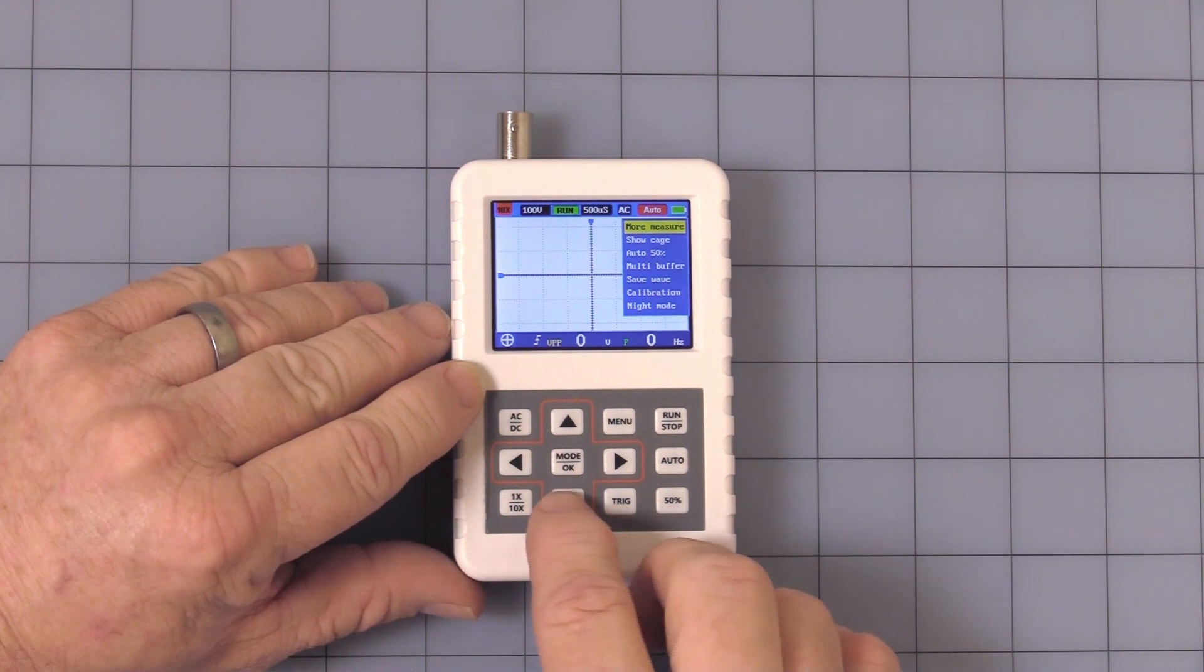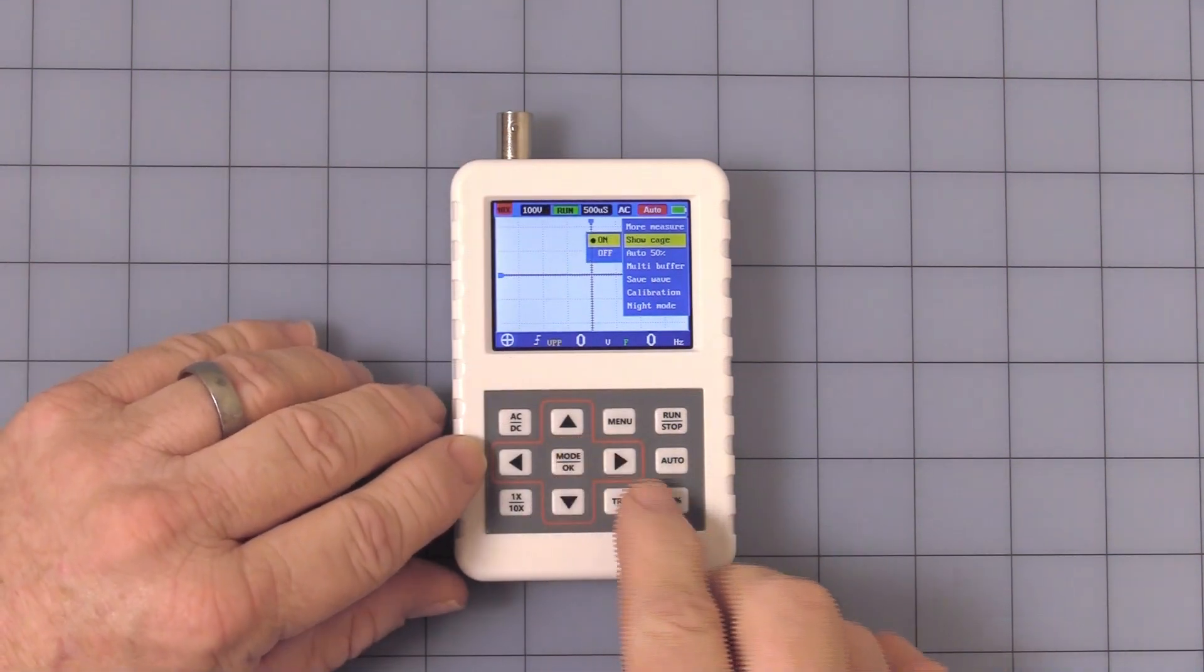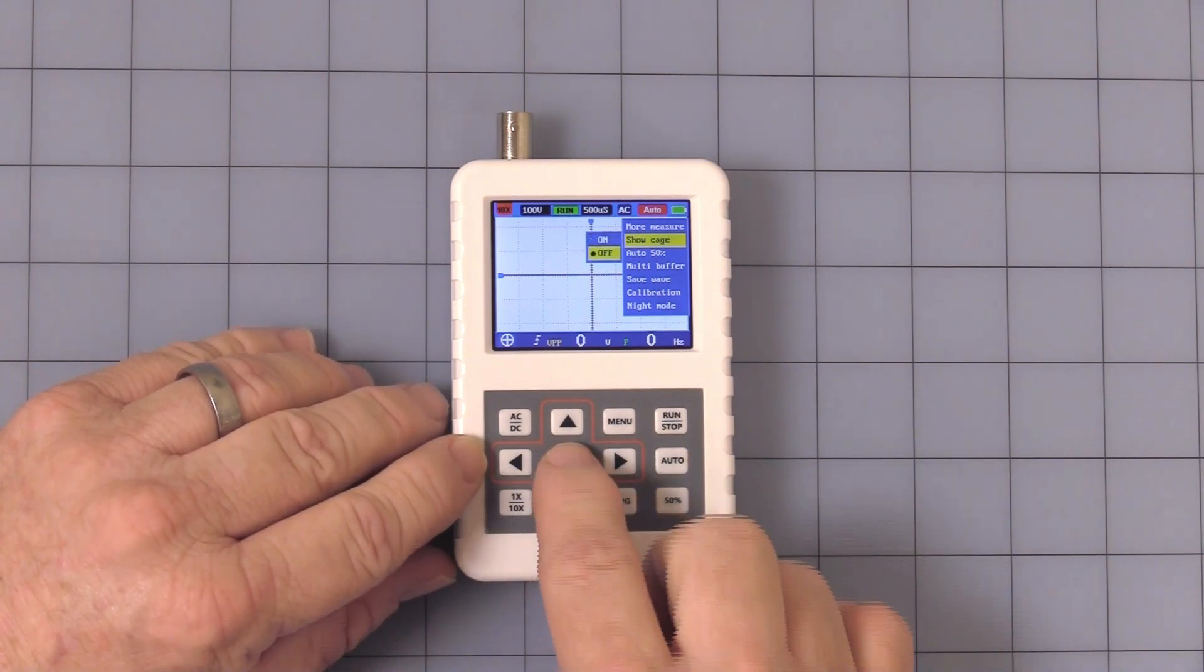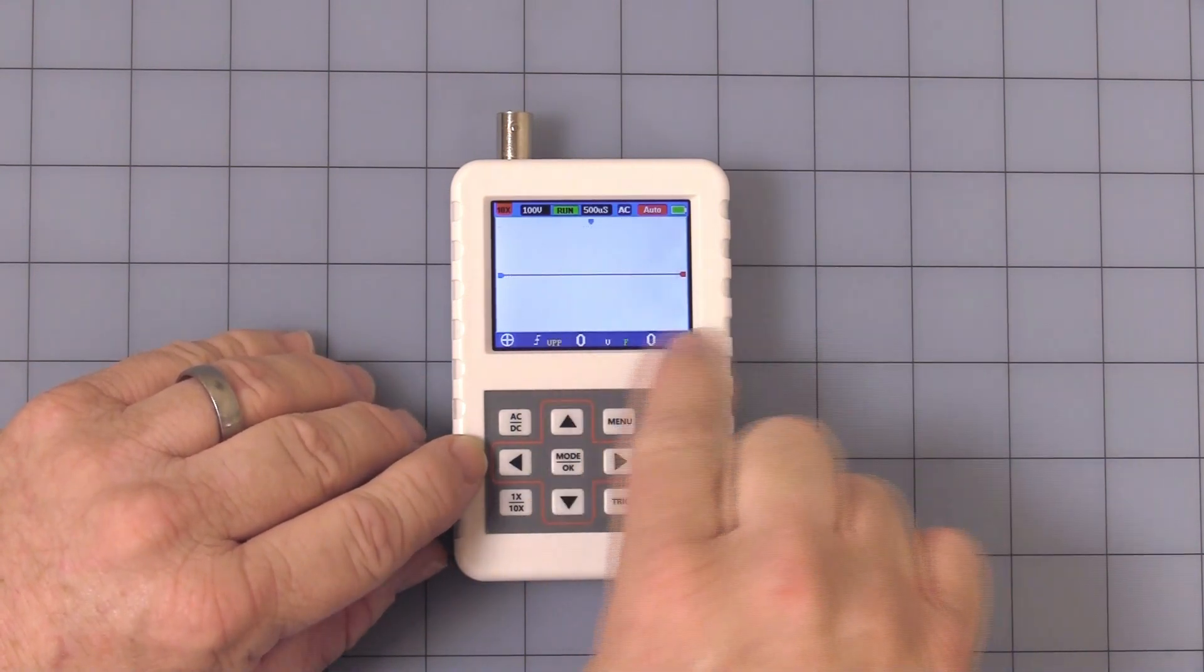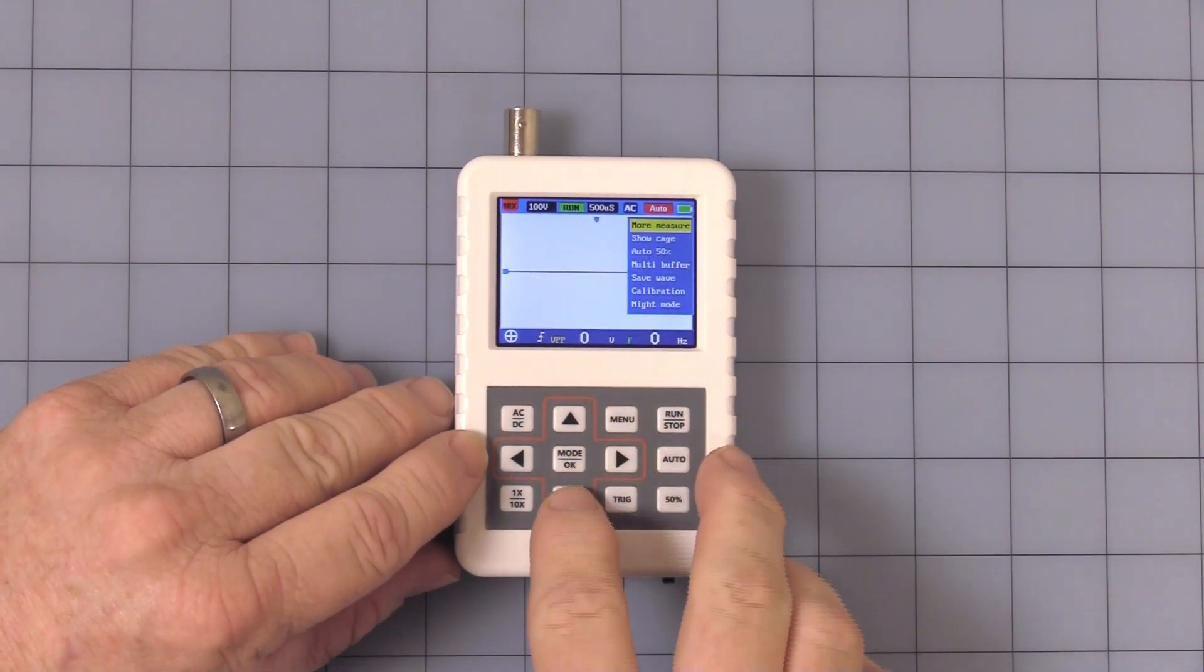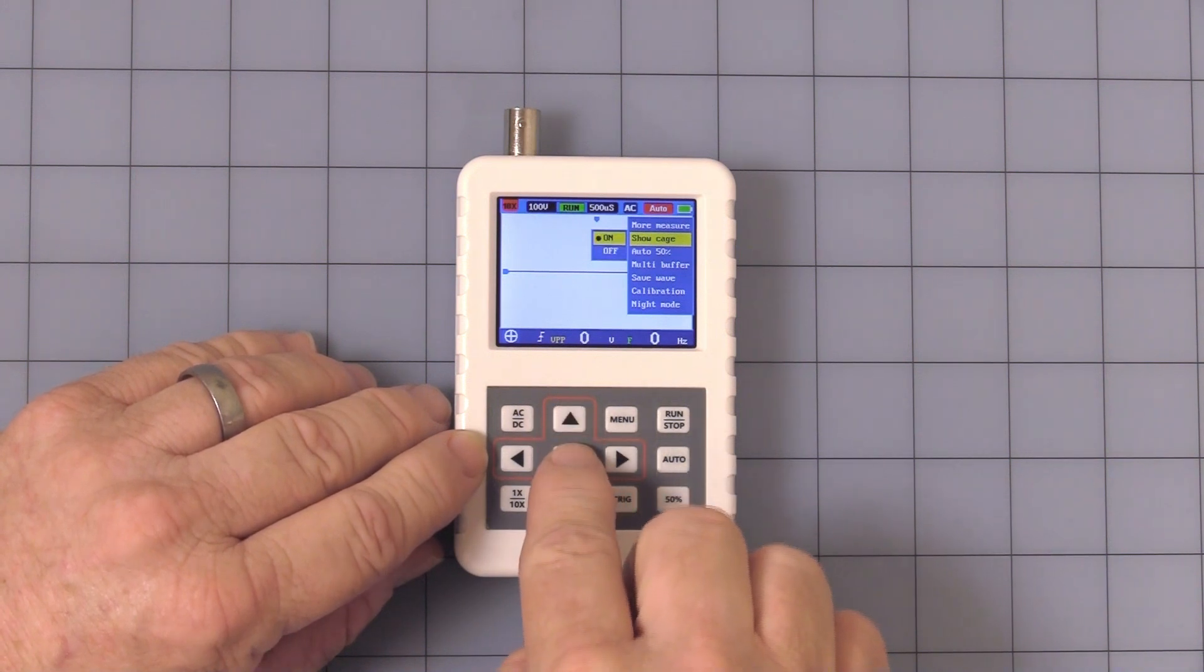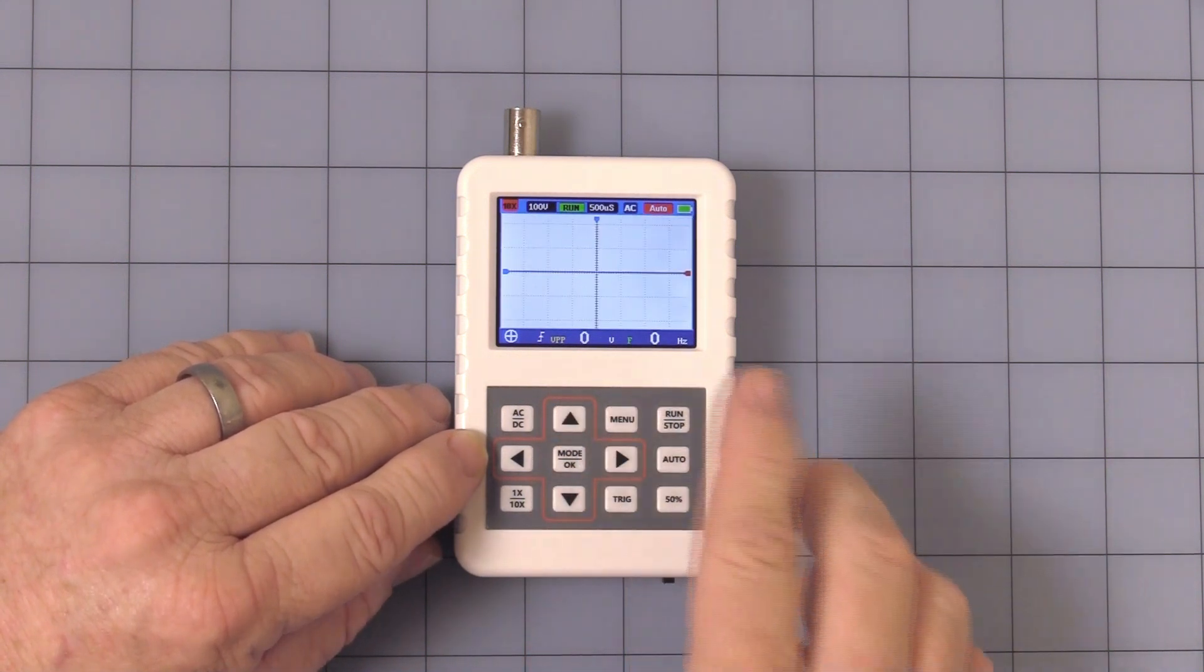Next is the cage, which is the little hash marks. You can turn that on and off. As you can see the little hash marks disappear. Let's put those back on. OK, and they're back.